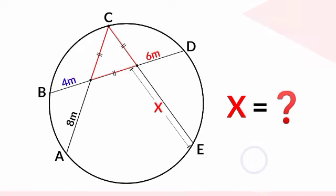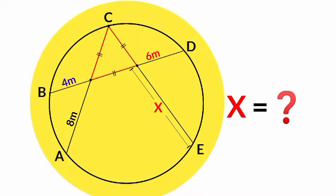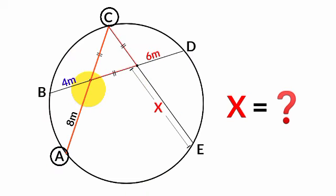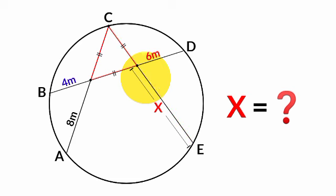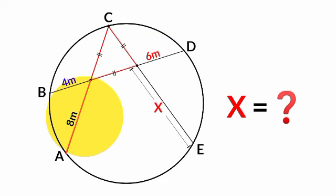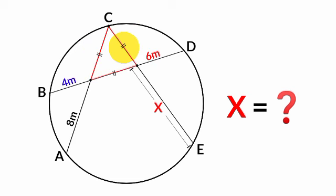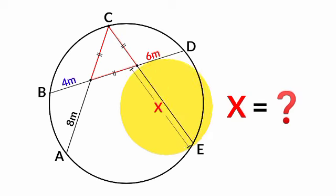Hello, good day friends. What we have here is a circle and three chords: chord AC, chord PD, and chord CE. We have the length of this segment to be four meters, this segment is six meters, and this is eight meters. We can see these three segments here — this, this, and this — are equal in length. We are asked to calculate the length of this segment X.